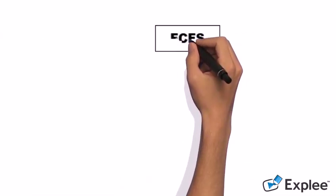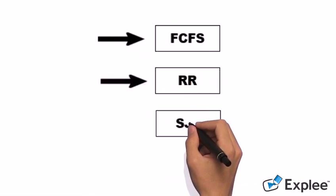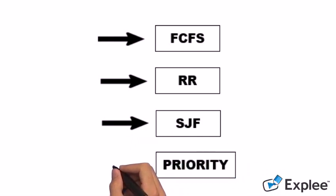So here, FCFS represents first come first serve. RR represents round robin, and SJF represents shortest job first. And we do have priority.